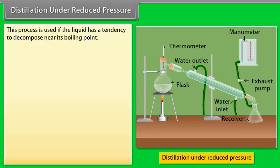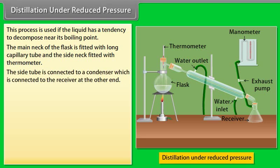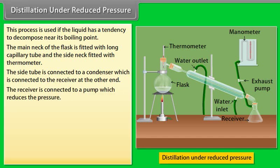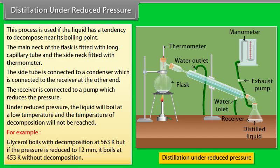Distillation under reduced pressure: this process is used if the liquid has a tendency to decompose near its boiling point. The flask is fitted with a long capillary tube and a thermometer. The side tube is connected to a condenser and then a receiver, which is connected to a pump that reduces the pressure. Under reduced pressure, the liquid boils at a lower temperature. For example, glycerol boils with decomposition at 563 K, but at a reduced pressure of 12 mmHg it boils at 453 K without decomposition.